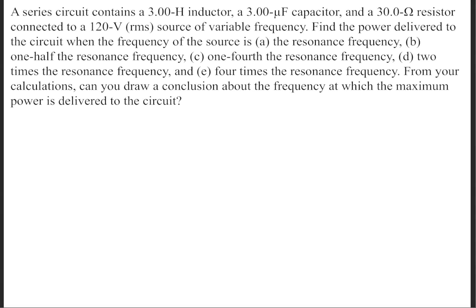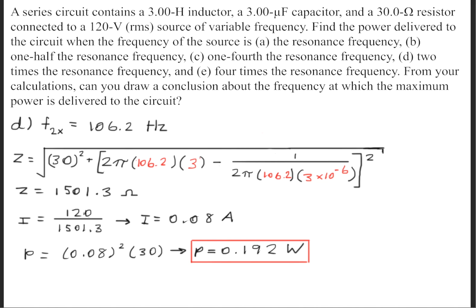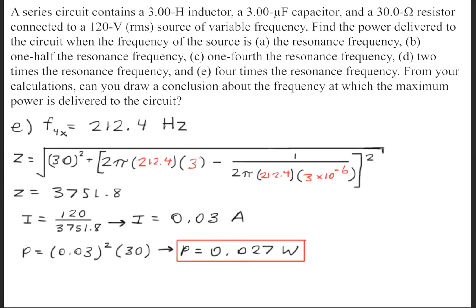At this point, it becomes quite repetitive. It's simply plugging and chugging in the numbers. So for part D, when we have twice the resonance frequency, we'll have a frequency of 106.2 Hertz. We'll go ahead and plug that into the impedance formula, solve for the current, and then solve for the power, and we get a power of 0.192 Watts.